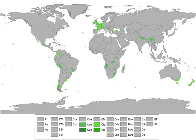Oceanic climates are defined as having a monthly mean temperature below 22 degrees Celsius in the warmest month, and above 0 degrees Celsius or minus 3 degrees Celsius in the coldest month. It typically lacks a dry season, as precipitation is more evenly dispersed throughout the year.